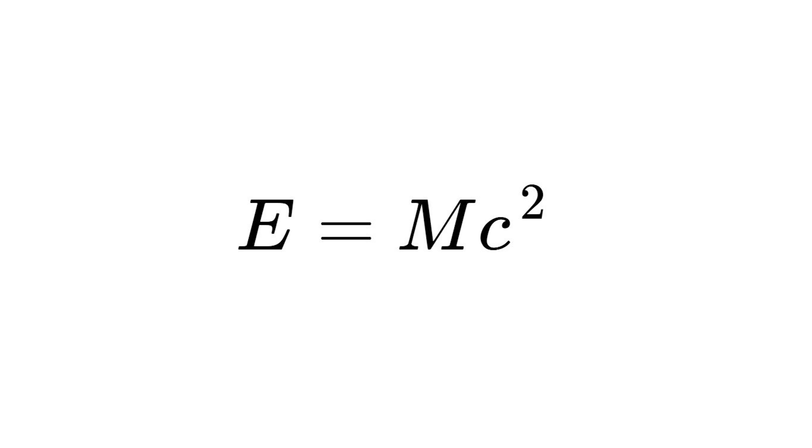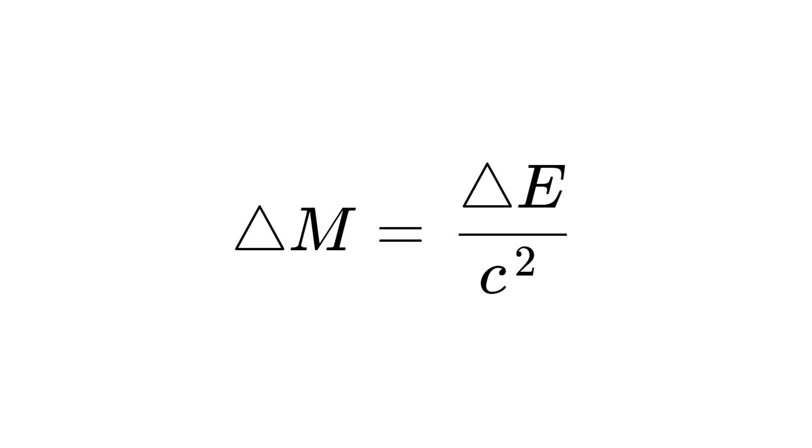...until Albert Einstein came along. Now you might recognize this equation: E equals MC squared. But when Einstein first wrote the version of this equation, it actually wasn't written this way — it was actually written as delta M equals delta E over C squared. And what that means is the change in mass equals change in energy over the speed of light squared. So actually mass isn't always conserved. What is conserved is the relationship between mass and energy: if you destroy mass, you create energy; if you destroy energy, you create mass.